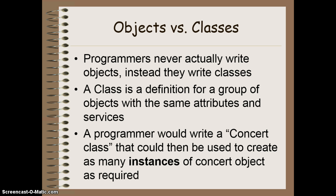When we're actually in the world of programming, programmers never actually create an object itself. Instead, what they do is write the code for a class, and that class can then be used as a template to create multiple objects of the same type. A class is basically a group of objects with the same attributes and services. The values stored in those attributes may be different — for example, one student might have a different IQ or gender than another, but they both share the same attributes. The programmer could create a concert class that could be used to create as many instances of a concert object as required.